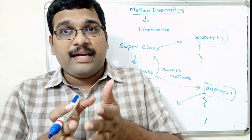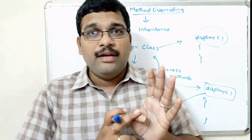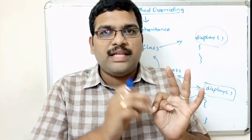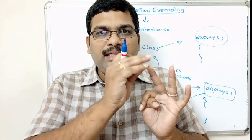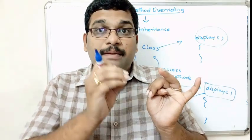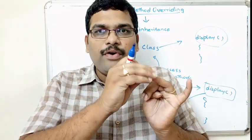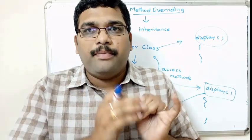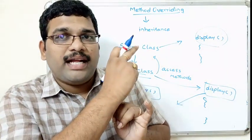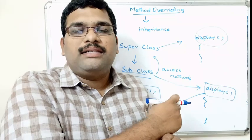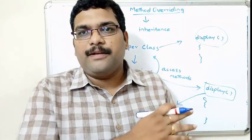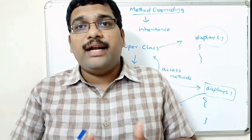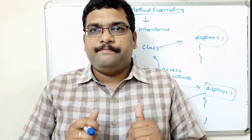The main constraints for method overriding are: first, the inheritance concept is needed; second, both methods must have the same name; third, both methods must have the same return type; and fourth, both methods should have the same scope — if the method is written as public in the superclass, it must also be public in the subclass.